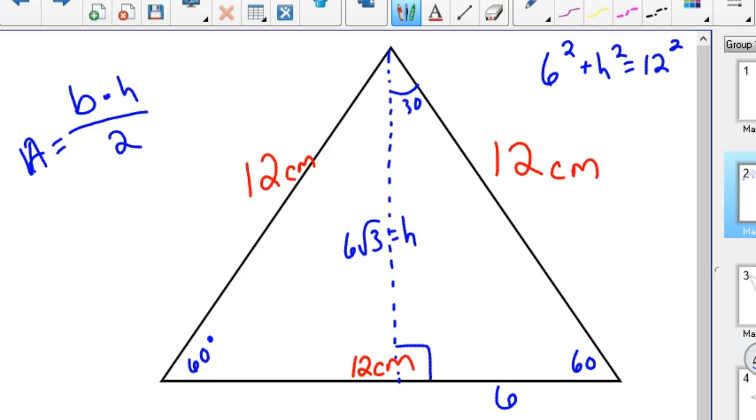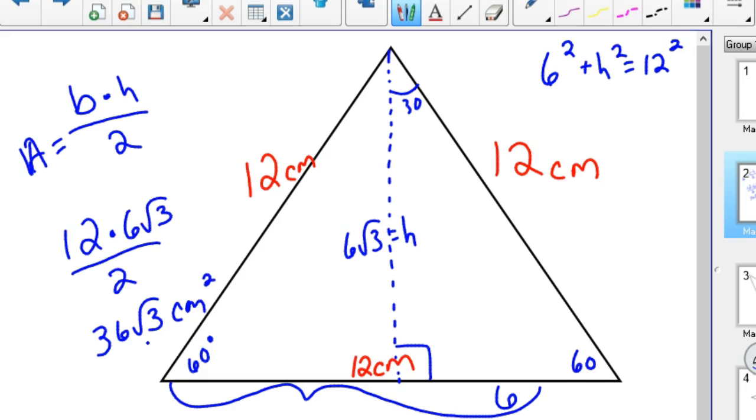So now we can go ahead and calculate the area of this thing. Again, it's 12 for your base times your height which is 6 root 3 divided by 2, which 12 times 6 divided by 2 is 36 square root of 3 centimeters squared. So that's the answer they want on that.